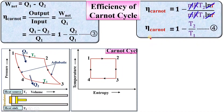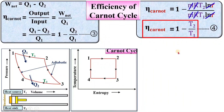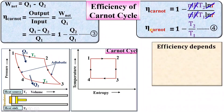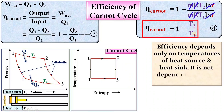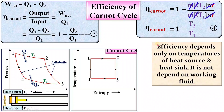In conclusion, the efficiency of the Carnot cycle depends only on the temperatures of the heat source T1 and the heat sink T2. It does not depend on the working fluid. Please write your valuable feedback in the comment box to motivate me to make more videos. Thanks for watching!